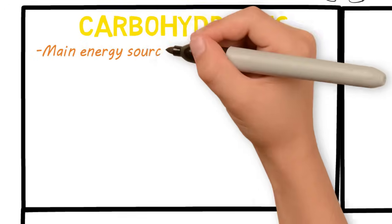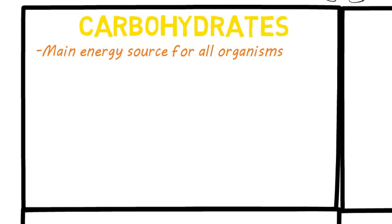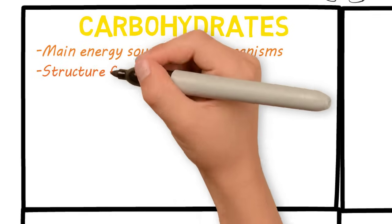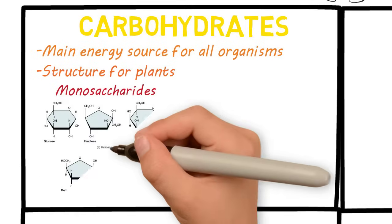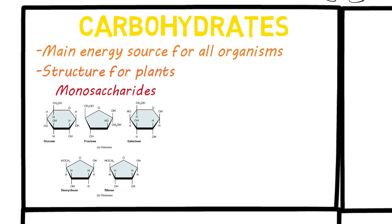Carbohydrates are the main fuel source for most living things, as well as a structural component for many plants. The monomers for carbohydrates are called monosaccharides — saccharide means sugar, so monosaccharides means one sugar. These are simple sugars like glucose, fructose, and ribose.